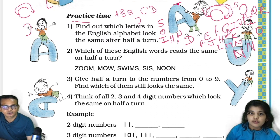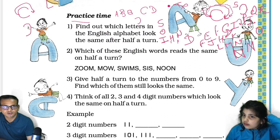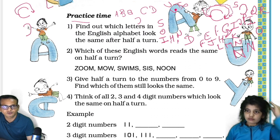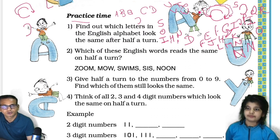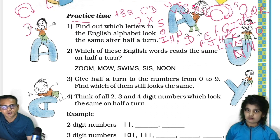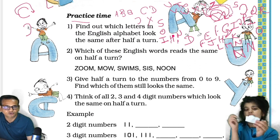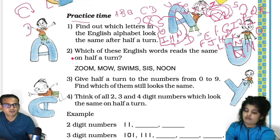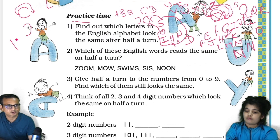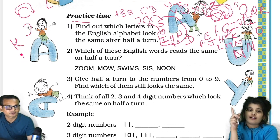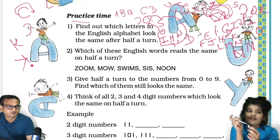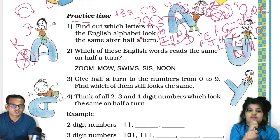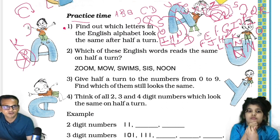S — S is also in that category. T — not there. U — also won't be there. V — also not. W — also no. X — X is also there. Y — not that. Z — Z will also be there. So Avisha was asking about K — let's look at it. It will be like this, so K won't be there. That's the answer for this one.